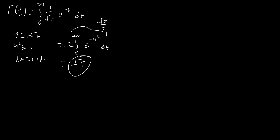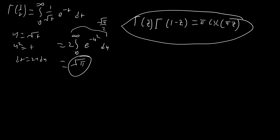The last thing I want to go over is something really useful for doing integrals, infinite series, or whatever you're using the gamma function for: Euler's reflection identity. I won't prove it here as it's a bit complicated, but it states that gamma of z times gamma of one minus z equals pi times cosecant of pi z. This formula pops up all over the place and is very handy to know.